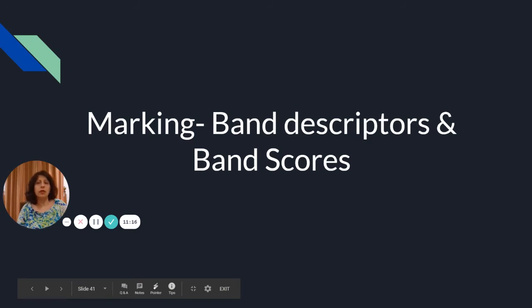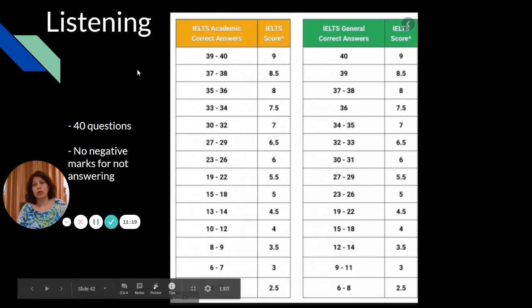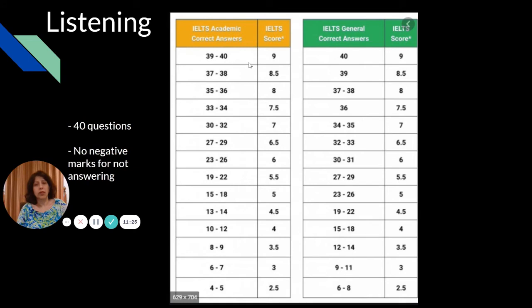Now coming to the marking - what are the band descriptors of the band scores? If you see, this is for academic and this is for general. If you would like to score nine, then you have to score at least 39 questions right, whereas for general it is slightly different - you have to get 40 if you want to score a nine. There are no negative marks for not answering. Even if you miss something, just write something, just guess - who knows, it might come out correct.